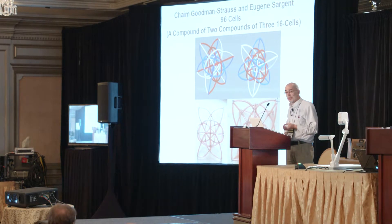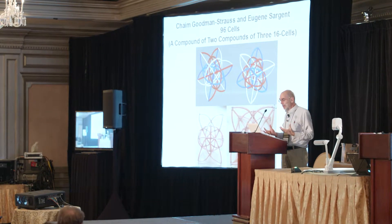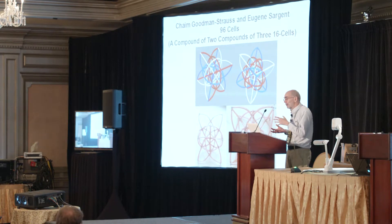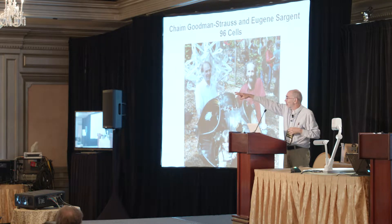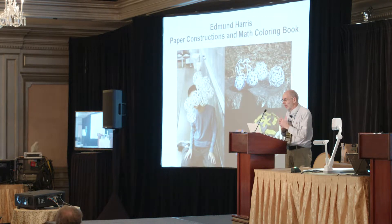Chaim Goodman-Strauss and Eugene Sargent have designed a fairly large thing made out of plumbing supplies called '96 Cells.' It's a compound of two compounds of three 16-cells in three different colors of plumbing material. You can look for Chaim and Eugene at a table to build a three-dimensional shadow of that four-dimensional object.